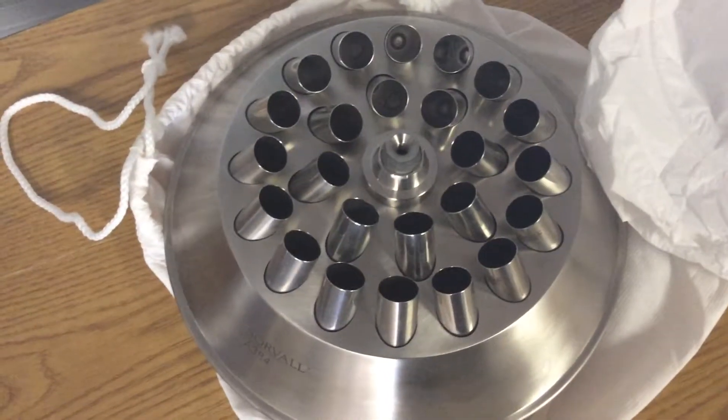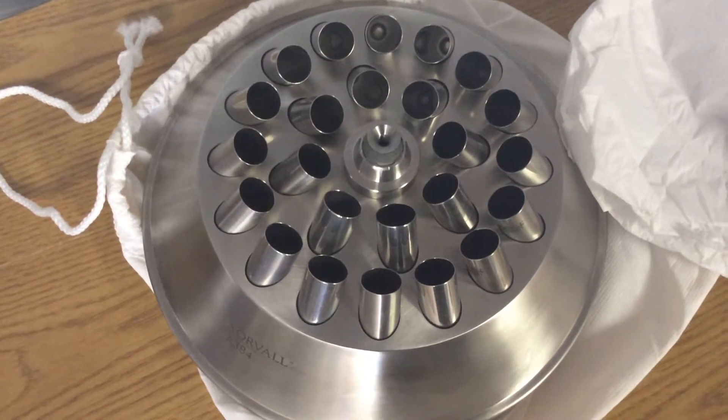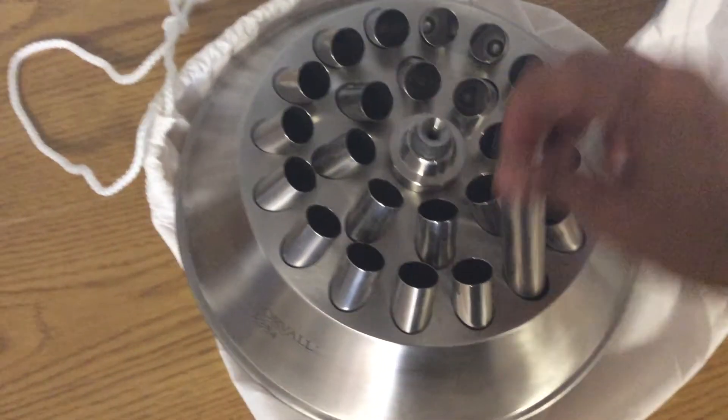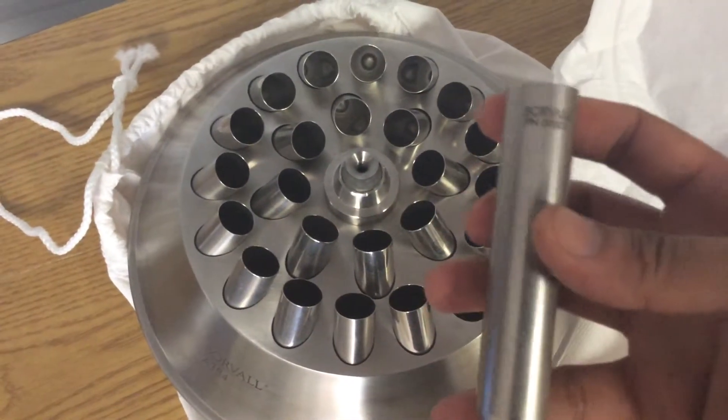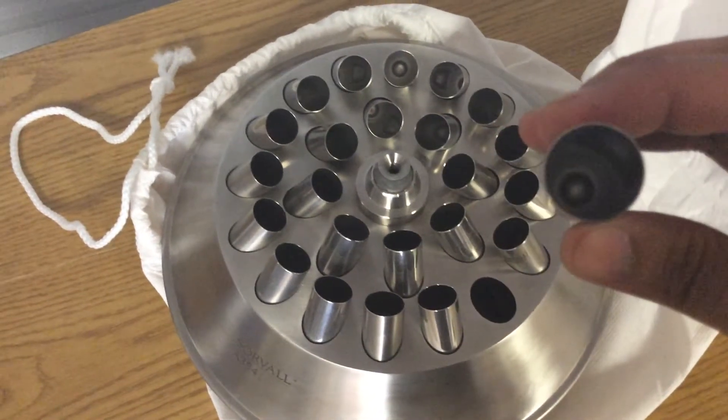24-place for 16 milliliter tubes. The part number for the tube is 00501, as you can see. And that's what it looks like.